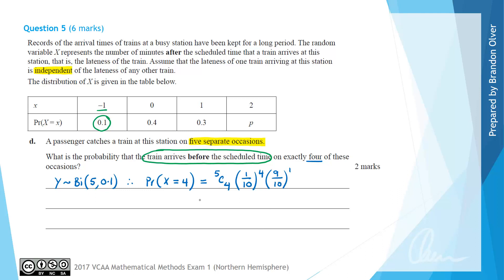So now we just need to evaluate this. So 5 choose 4, there are 5 ways that that can happen, multiplied by 1 over 10 to the power of 4 is the same as 1 over 10,000, multiplied by 9 over 10.